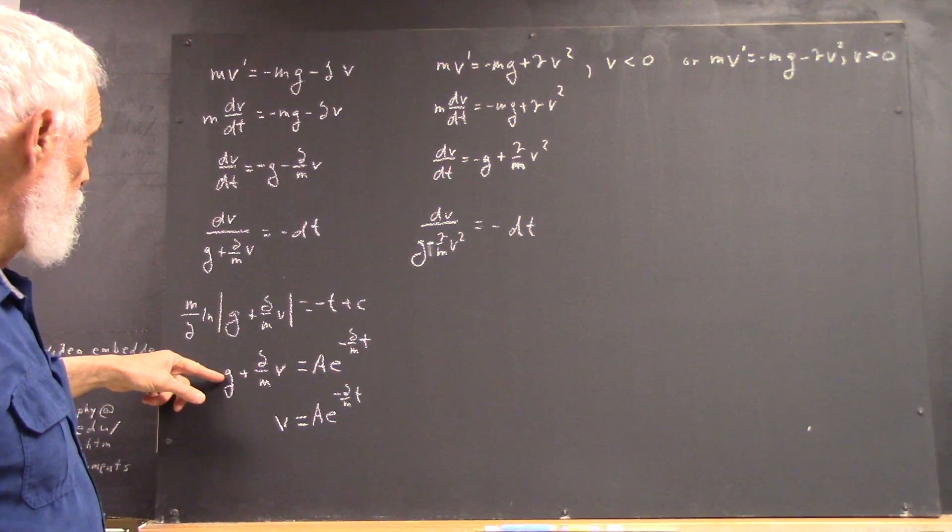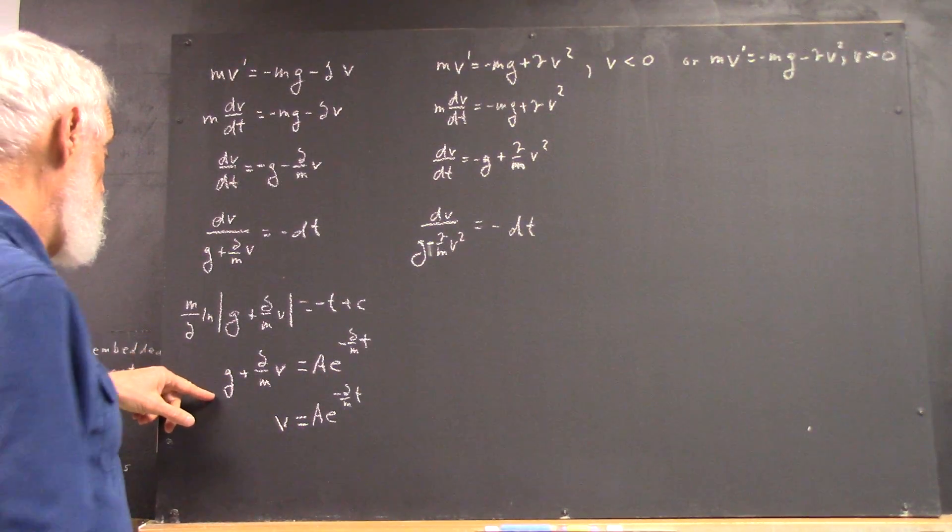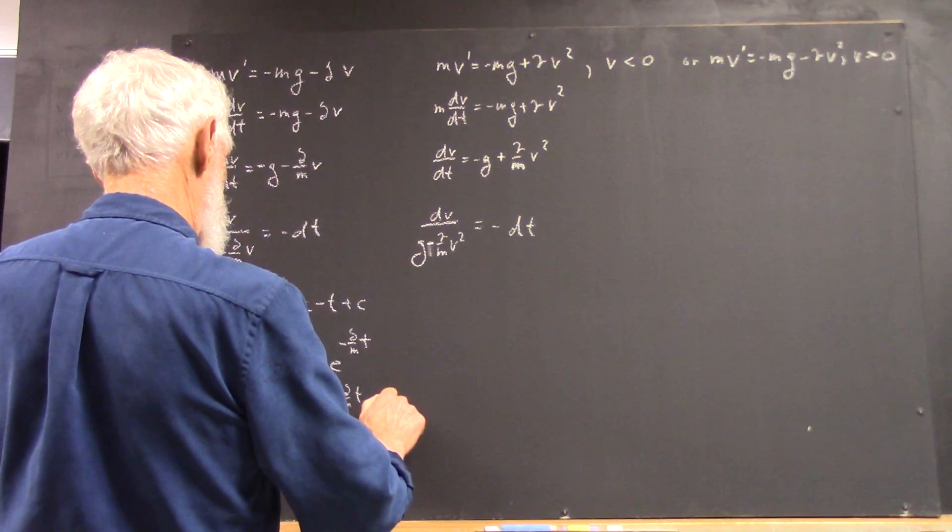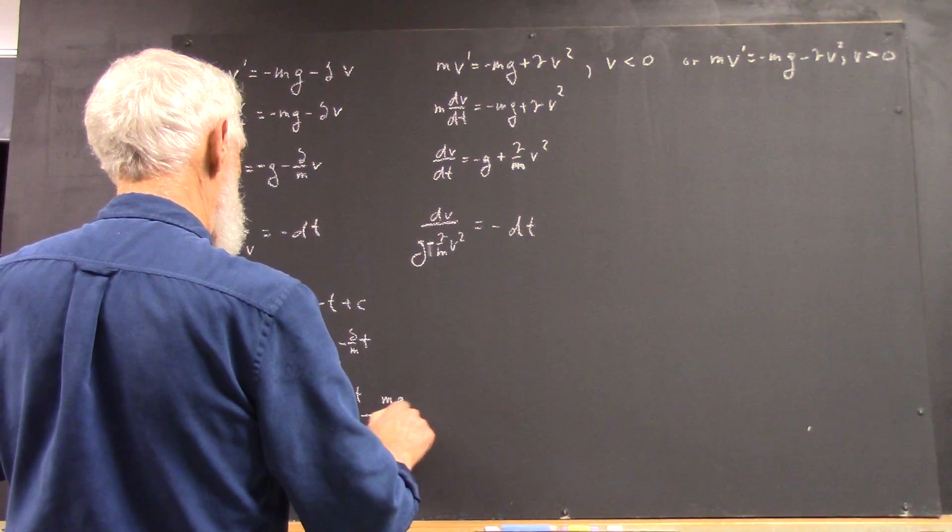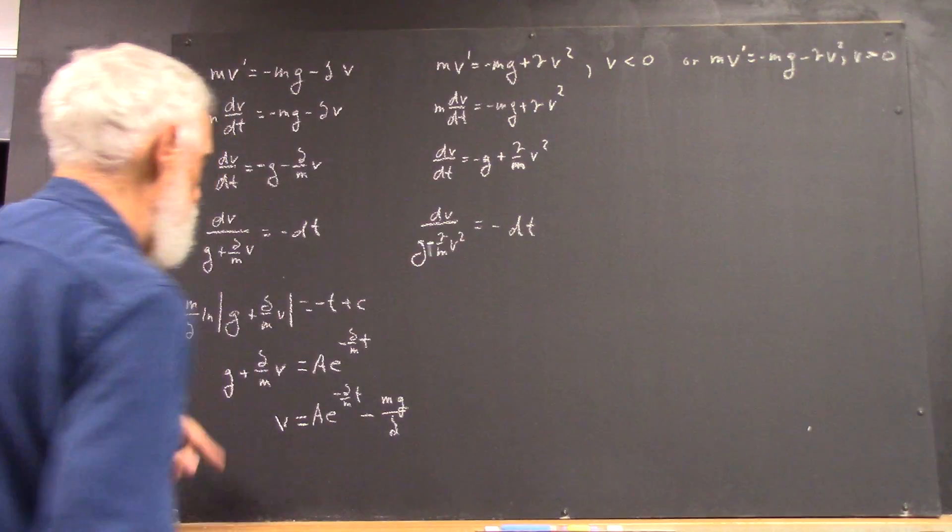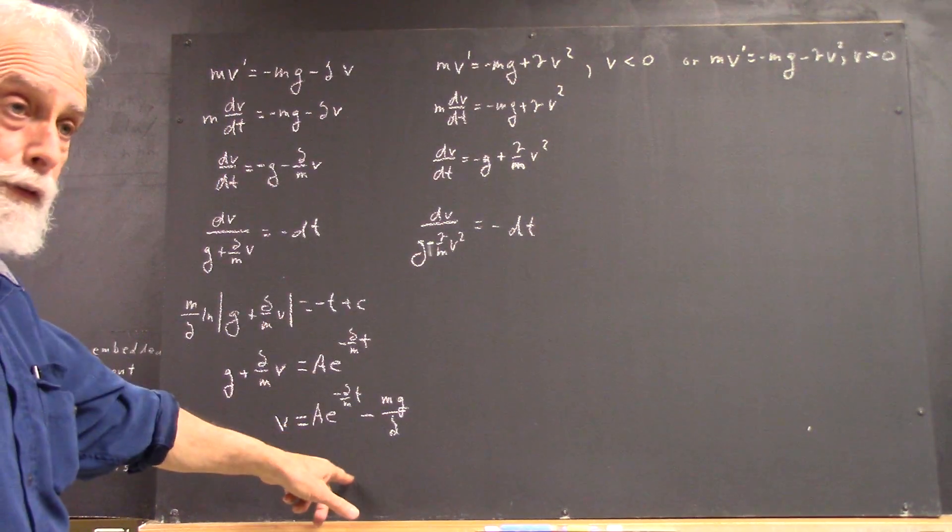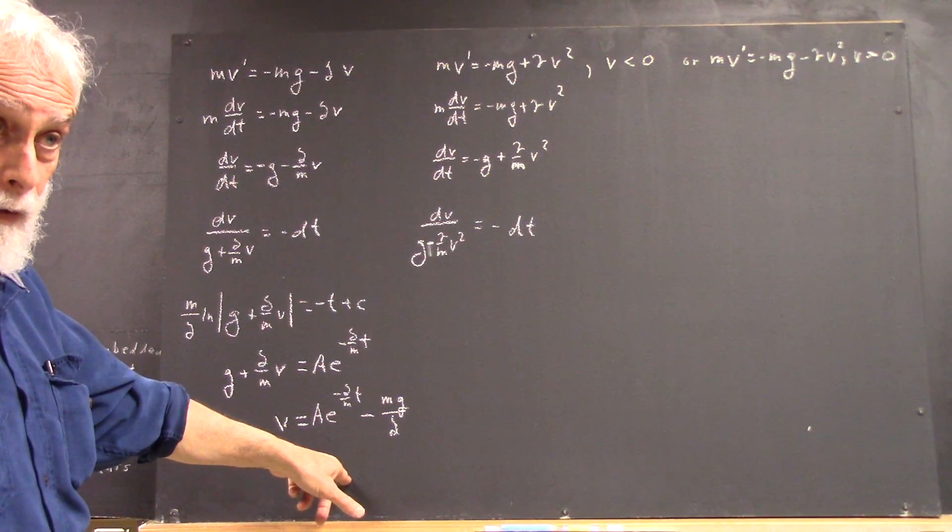But of course, then you're going to multiply the G by M over delta, and you're going to end up then with a negative MG over your delta, if I've done the arithmetic correctly. So check me on that.